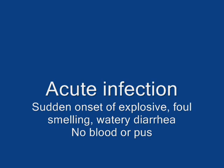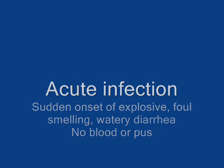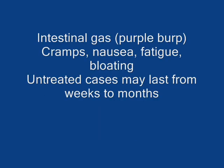Acute infection is characterized by a sudden onset of explosive, foul-smelling, watery diarrhea. There will be no blood or pus in the diarrhea. It is also characterized by intestinal gas, also known as sulfur burp, as well as cramps, nausea, fatigue, and bloating. Untreated cases may last for weeks to months with varying intensities and remissions.